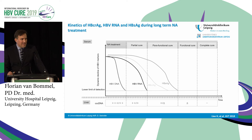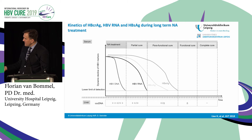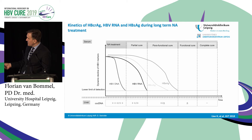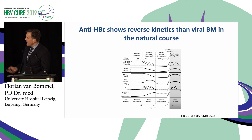The kinetics of core-related antigen, HBV RNA, and S antigen during long-term treatment are depicted here, but this is just a scheme — not the truth; I will show you later how this looks in real life. When you start treatment, the DNA goes down very quickly during nucleoside analogue treatment, then RNA may follow or core-related antigen may follow, and S antigen follows last. Once S antigen becomes undetectable, we have achieved functional cure — this is where we want to go.